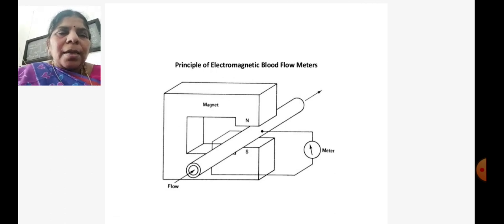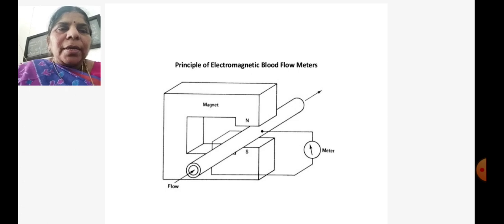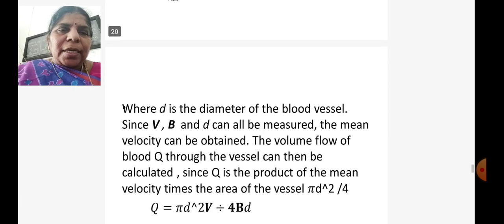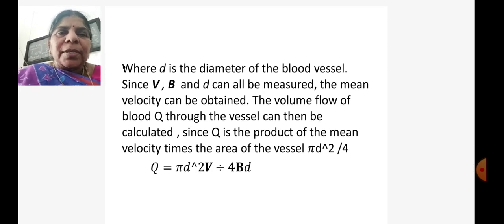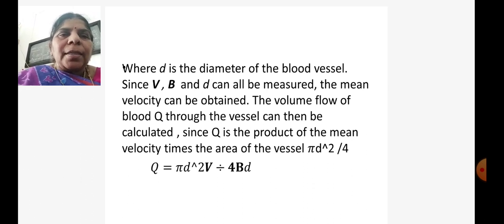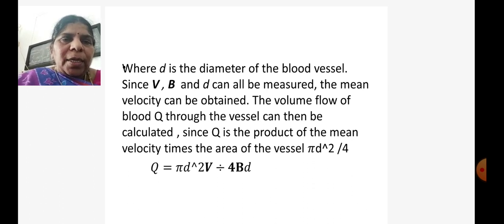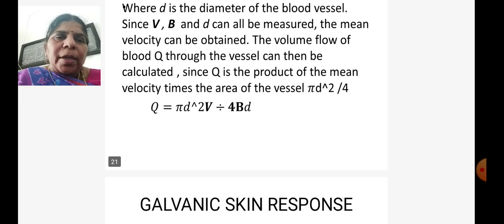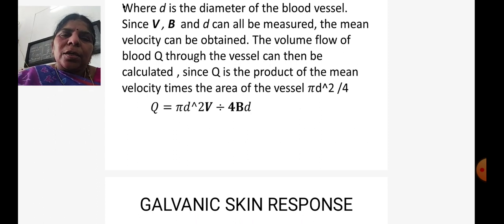The principle used here is Faraday's Law, which we have learned from electricity and magnetism, and is used for calculating the blood flow rate in the human body. Since we know V, the magnetic field B, and the diameter D of the vessel, the mean velocity can be obtained. The volume flow rate Q through the vessel can be calculated since Q is the product of the mean velocity times the area of the vessel: Q = πD²V/4BD. Using this formula, you can calculate the blood flow rate in the human body.